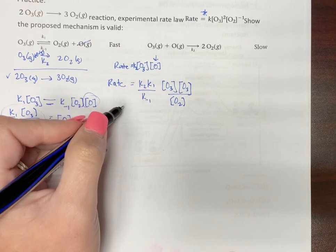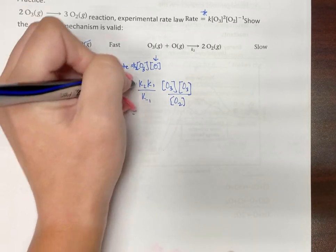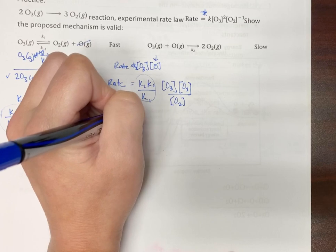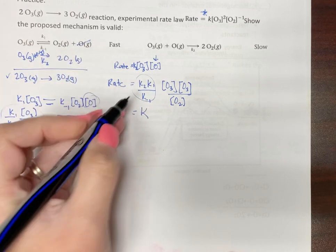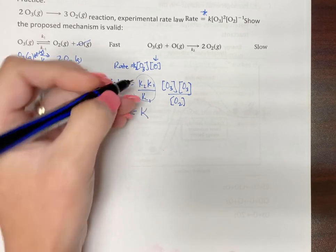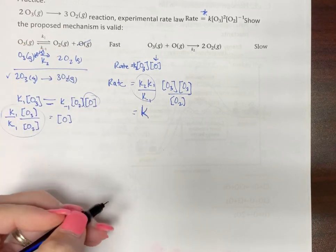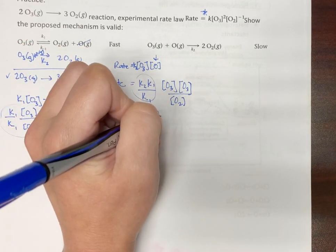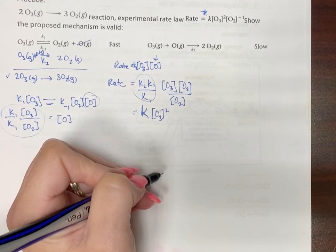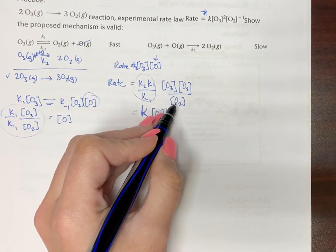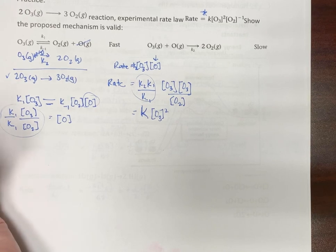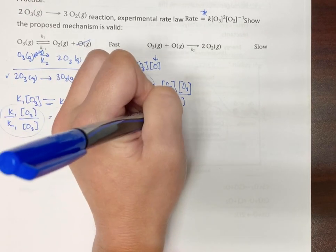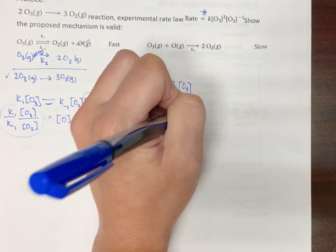So now let's clean this up. All the rate constants get combined into an overall K. So they're not K for each step, they're overall rate constant K. O3 times O3 squared and then in the bottom we're going to use a negative exponent to do that. So that's where we get O2 to the negative 1.